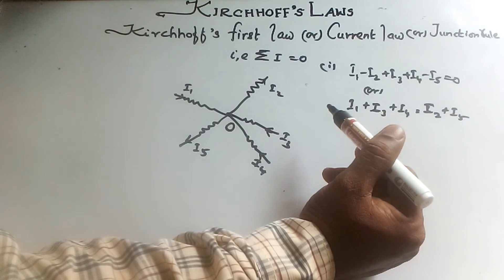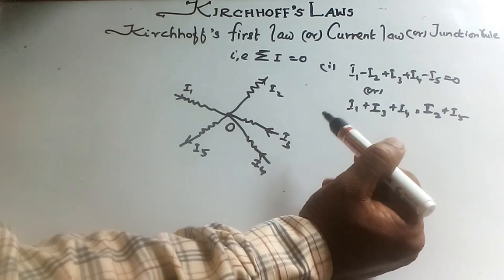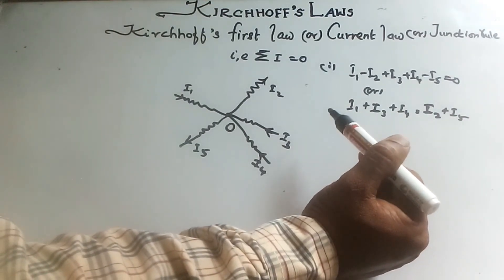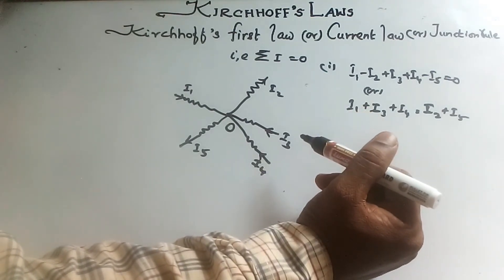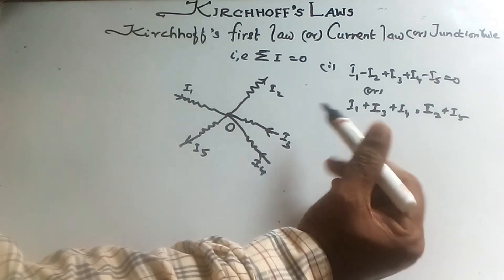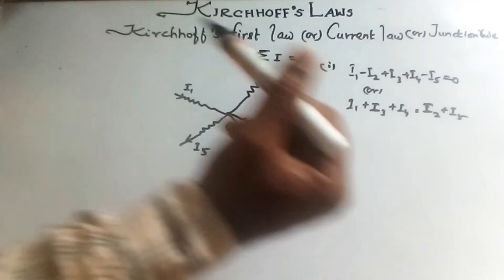The first law is in accordance with the law of conservation of charge. The charge does not accumulate at the junction. The total charge entering a junction is equal to total charge leaving the junction.